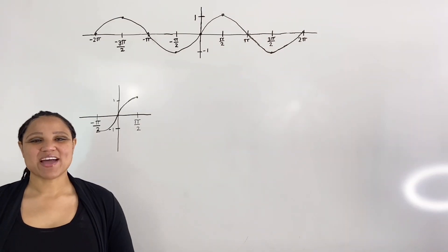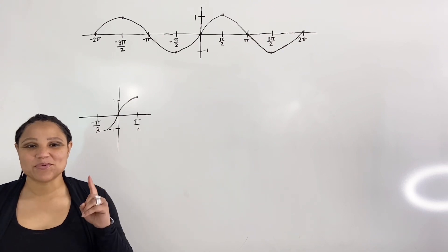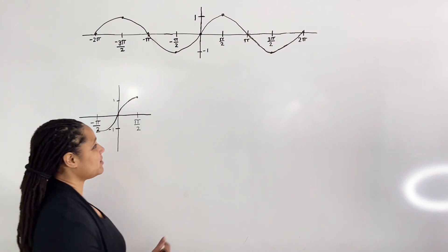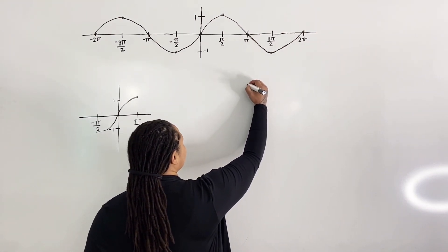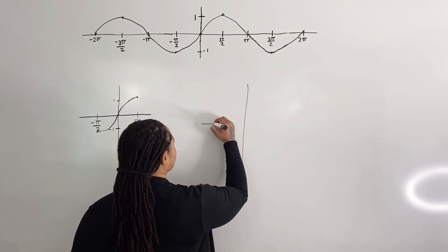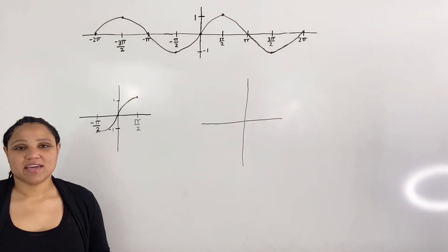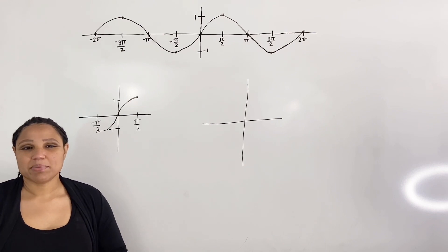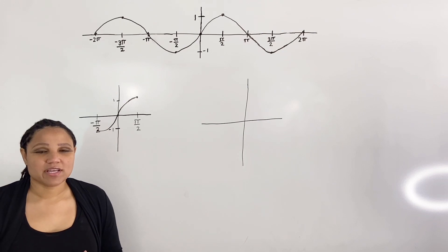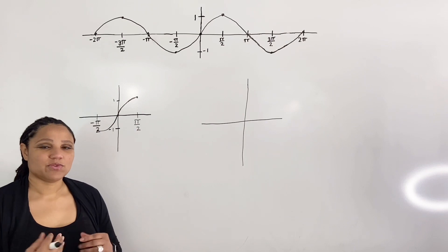Now in order to graph inverse sine we want to go through a series of steps. Step one: draw a neat number quadrant. One important thing to note is that pi over two is approximately 1.6, so it's important to place pi over two in between the numbers one and two.